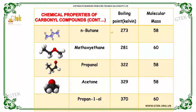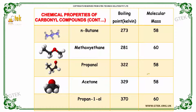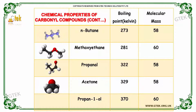Some important compounds with their boiling points and molecular masses are given here. N-butane has a boiling point of 273 K and molecular mass 58. Methoxyethane has a boiling point of 281 K and molecular mass 60. Propanal has a boiling point of 322 K and molecular mass 58. Acetone has a boiling point of 329 K and molecular mass 58. Propane-1-al has a boiling point of 370 K and molecular mass 60.